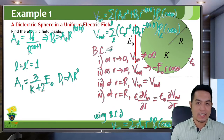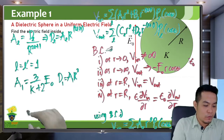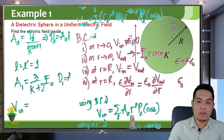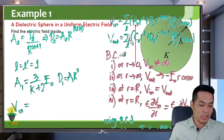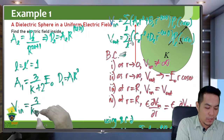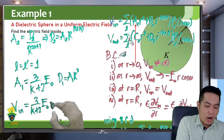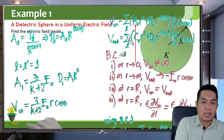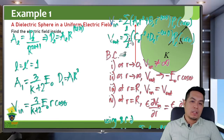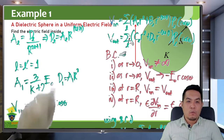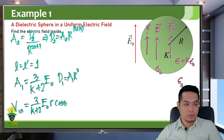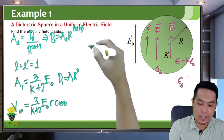You can now solve for the potential inside. The potential inside is just A₁ R cosθ, which is A₁ times R to the 1 times P₁. So the potential inside equals (3 over K+2) times E₀ times R cosθ. To find the electric field, we take the negative gradient of this potential inside.